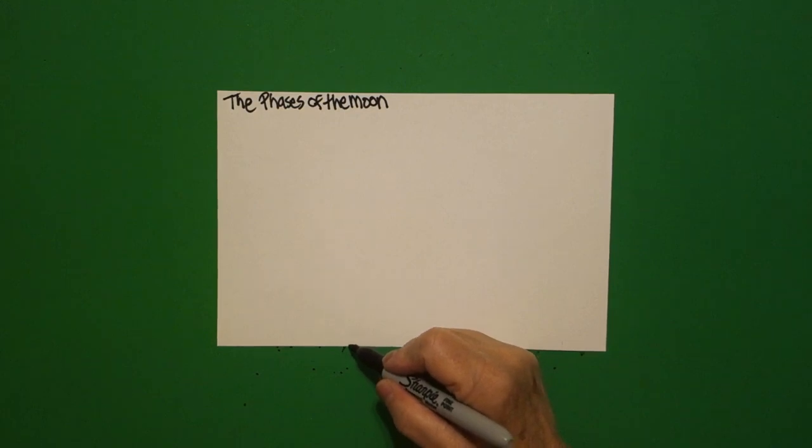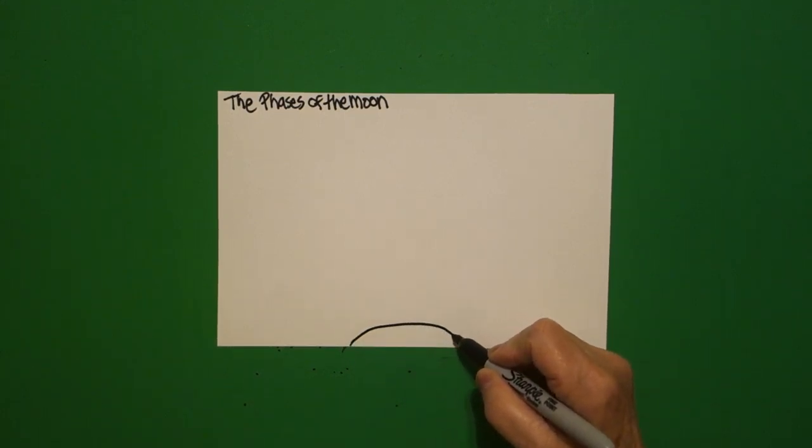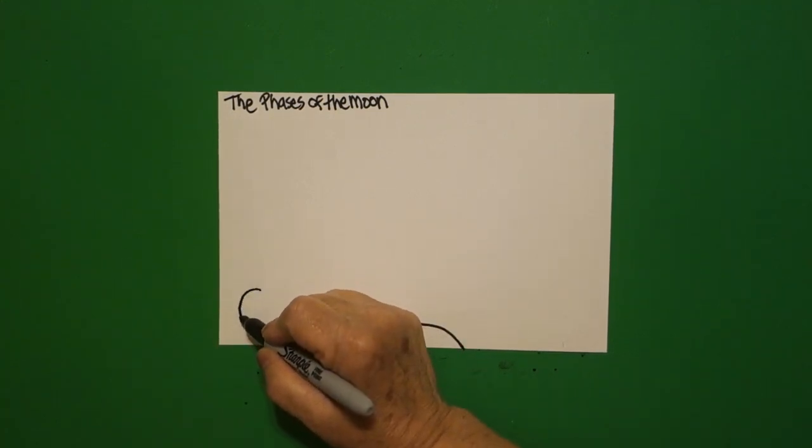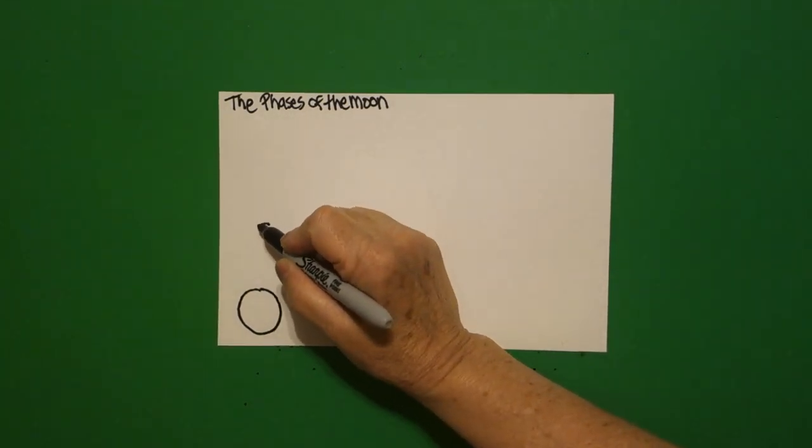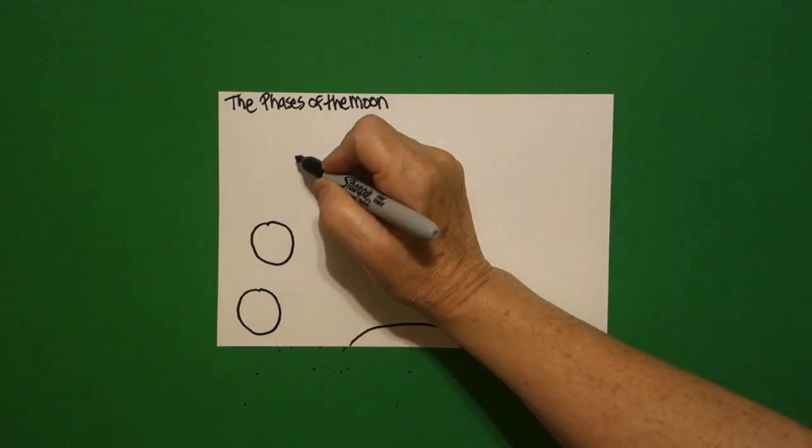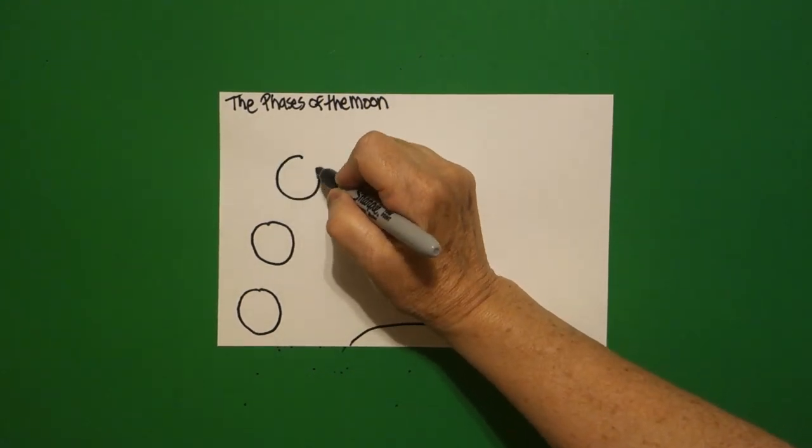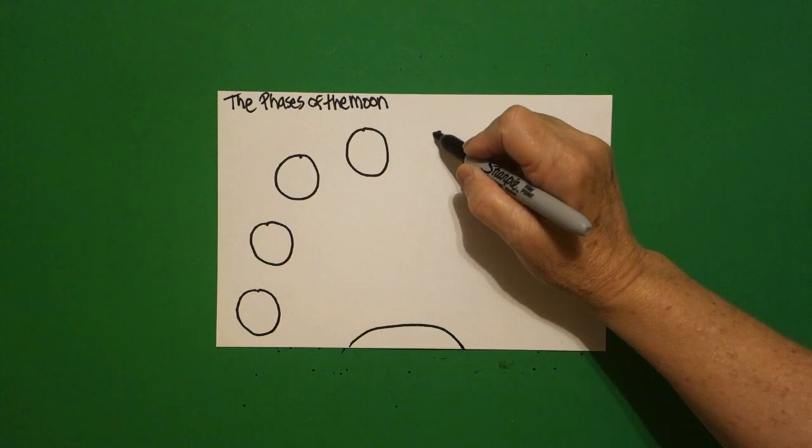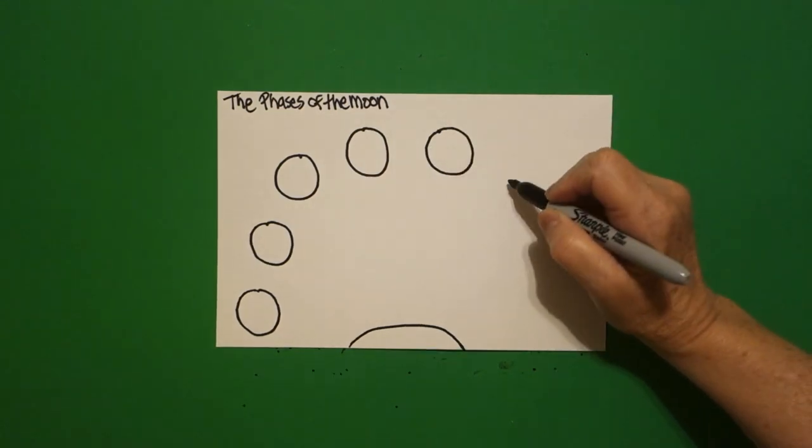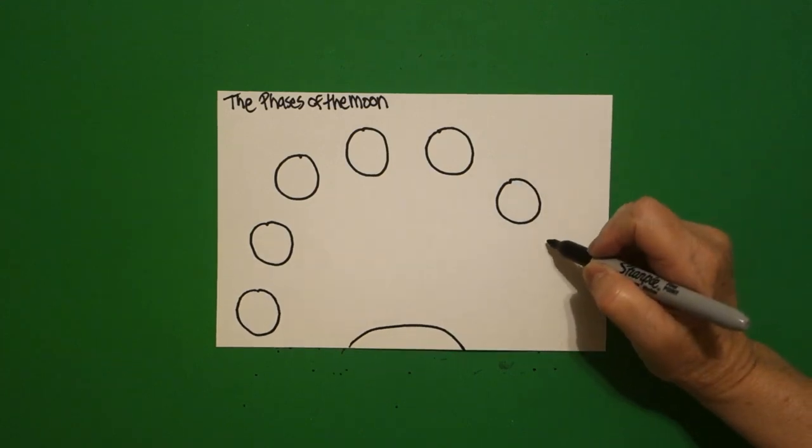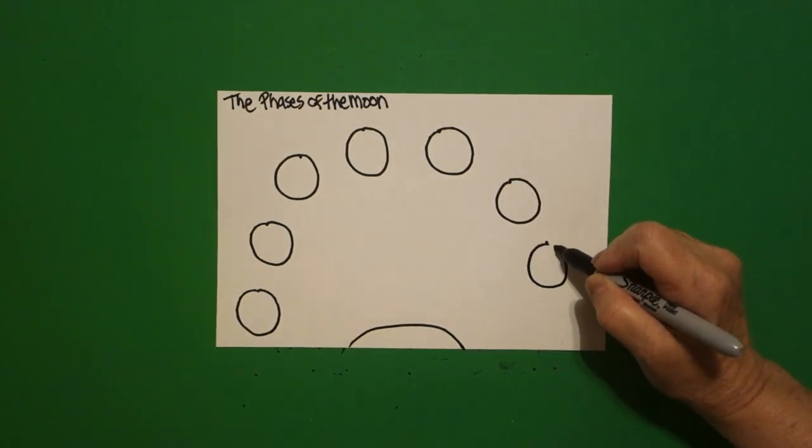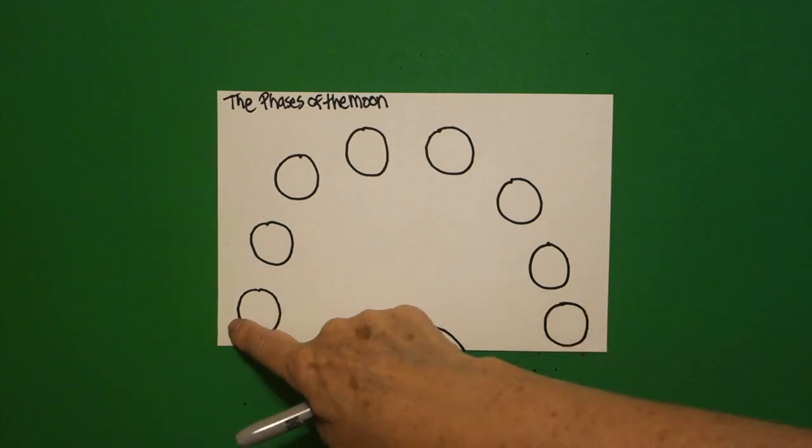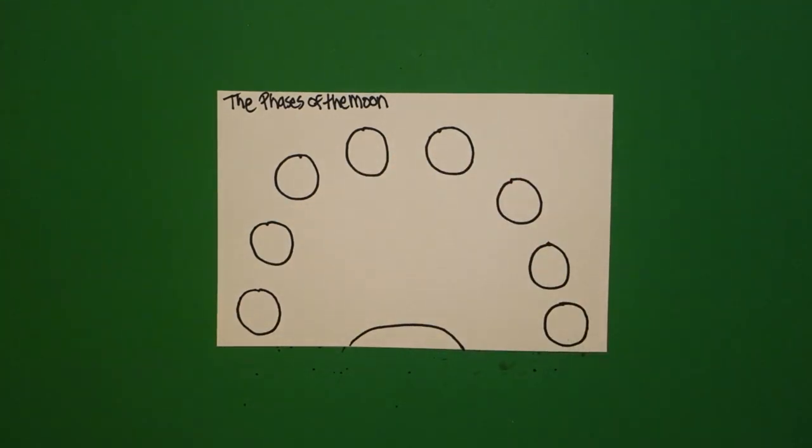Down here, right in the center, I'm going to put a big curve line up, over, and down. Starting over here on the left, I'm going to draw one, put a dot, two, put a dot, three, put a dot, four, put a dot, five, put a dot, six, put a dot, seven, put a dot, eight baby circles. Now, you'll notice that this is going in an arc. The moon moves in an arc.